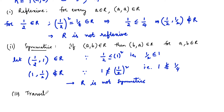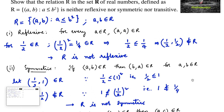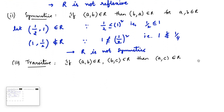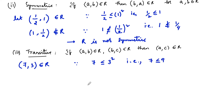Now let us check the third property: transitive. The condition for transitive is: if (a, b) belongs to R and (b, c) belongs to R, then (a, c) must belong to R. Consider the ordered pair (7, 3) belonging to R, since 7 ≤ 3² = 9, which satisfies the condition.